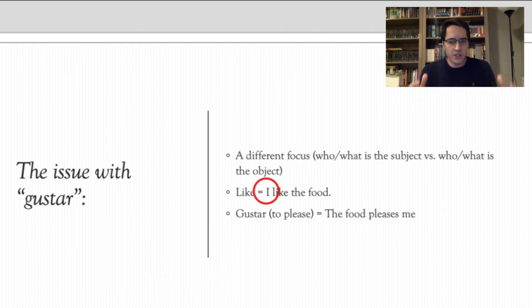Gustar and the verb to please function the same way. The food pleases me. Now we do have the same more or less idea that I derive pleasure from the food or that I like the food. However, what is the focus of this sentence? Who or what is the subject?